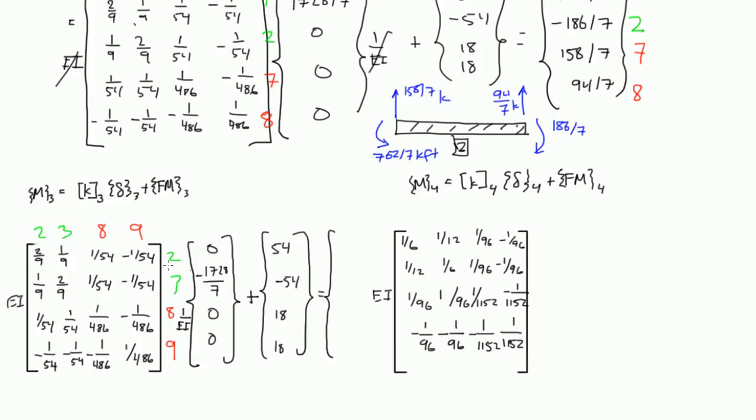our reactions that correspond to degree of freedoms 2, 3, 8, and 9 are 186 over 7, negative 762 over 7, 94 over 7, and 158 over 7. Okay?